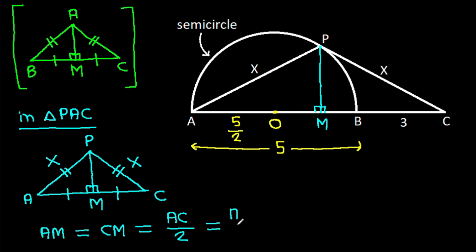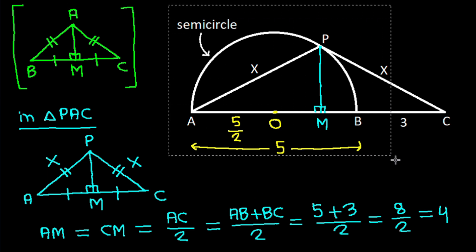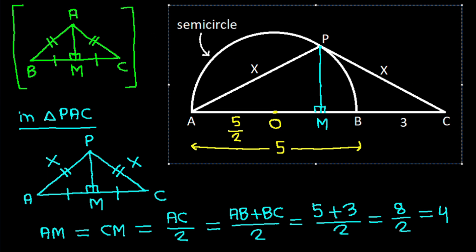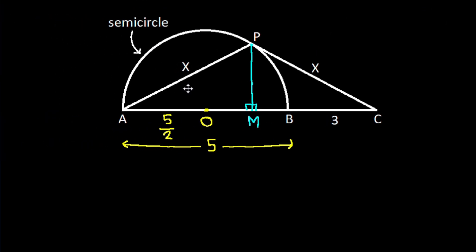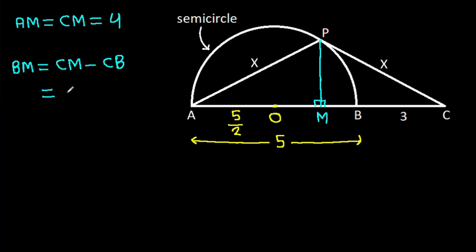And AC is AB plus BC over 2, which is 5 plus 3 over 2, that is 8 over 2, which equals 4. So AM equals CM equals 4. And BM will be CM minus CB, which is 4 minus 3, that will be 1. So BM is 1.